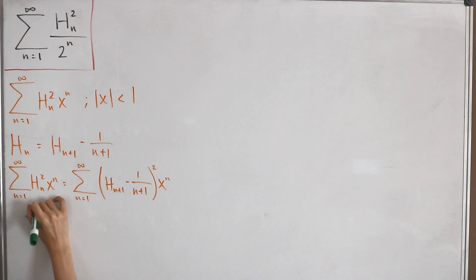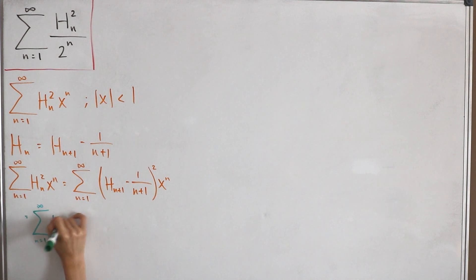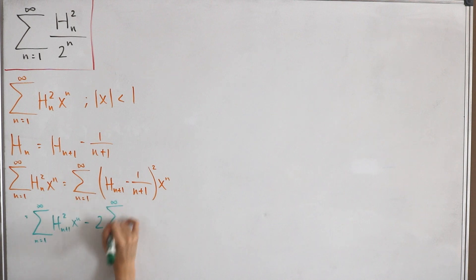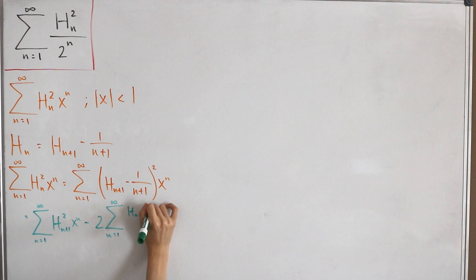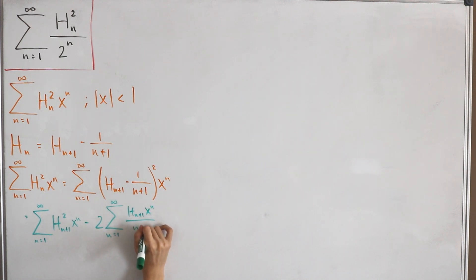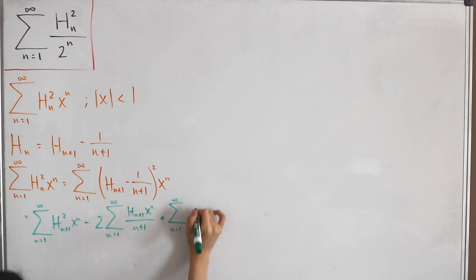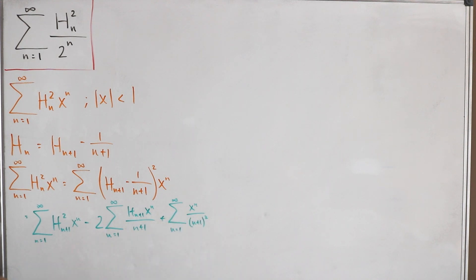After expanding, we get: first, the infinite sum from n=1 of H_{n+1}² · xⁿ; minus two times the infinite sum from n=1 of H_{n+1} · xⁿ/(n+1); plus the infinite sum from n=1 of xⁿ/(n+1)². Now let's do some re-indexing, changing the starting index to n=2 for all these sums.